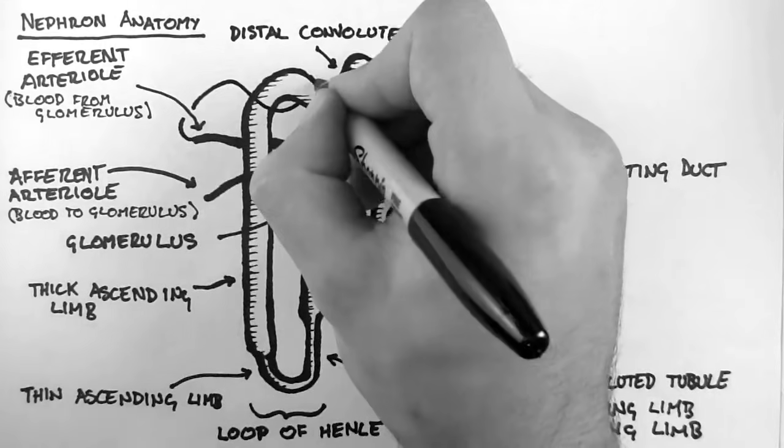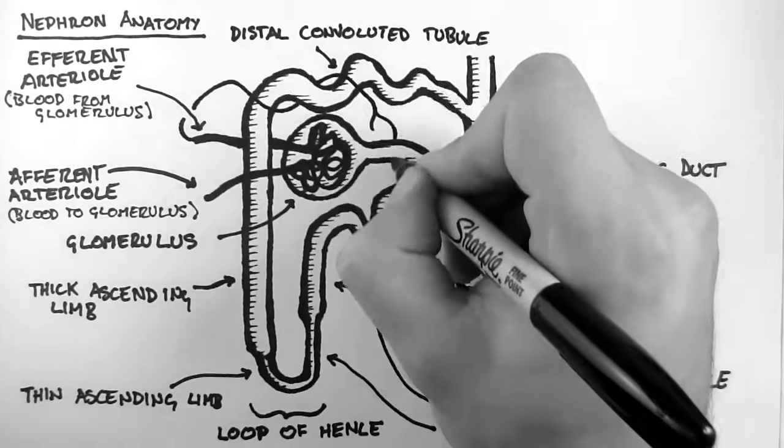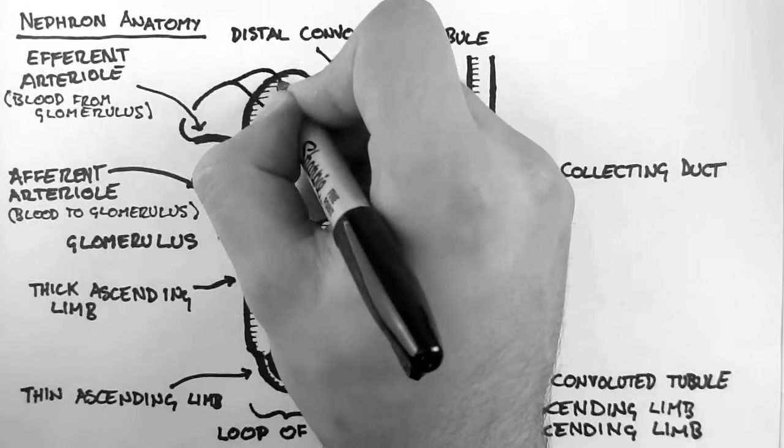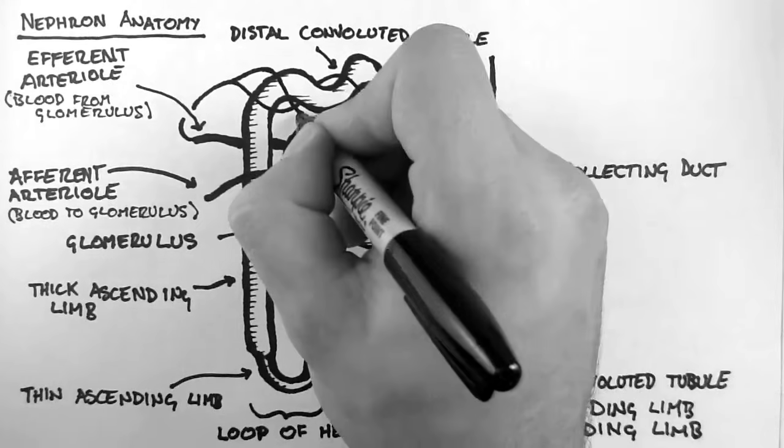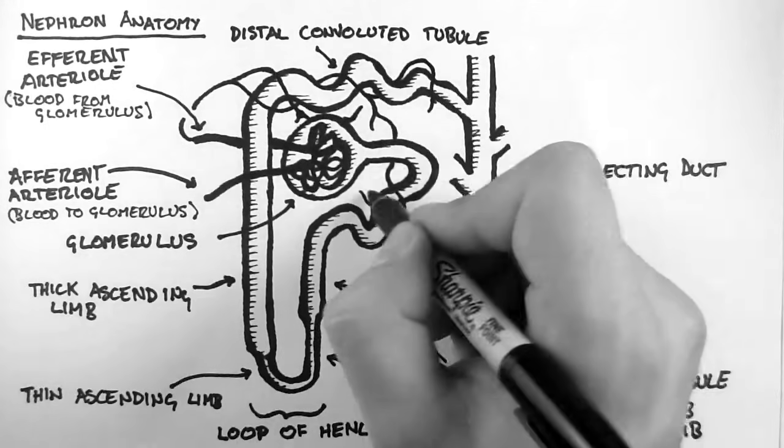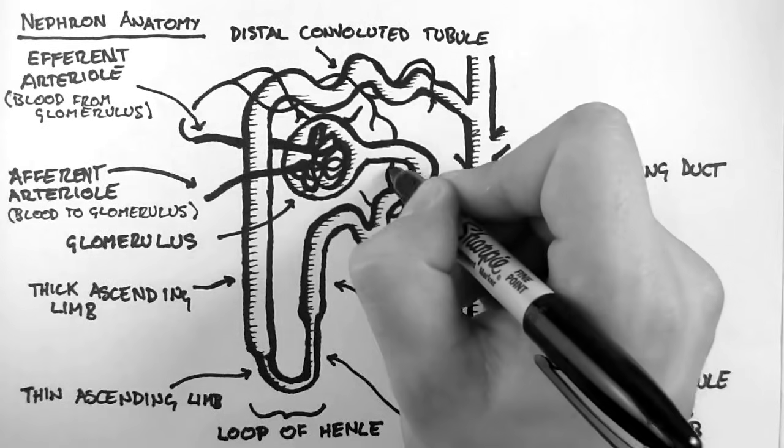Now the last thing to talk about is the vasculature of the nephron, and this is really important. The efferent arteriole of the kidney carries blood away from the glomerulus, and then it supplies two capillary beds.